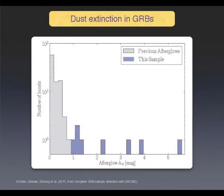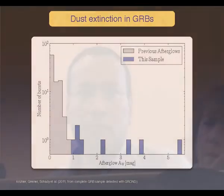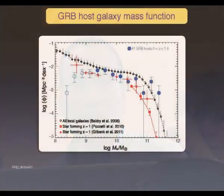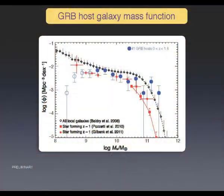There is a small fraction with large extinction, but we don't know whether we are missing something. Looking at the stellar mass distribution: these are normal galaxies at low redshift and at redshift about 1. For a small sample of GRB host galaxies at redshift below 1.6, the error bars are very large but it looks like there is a contribution from massive galaxies.